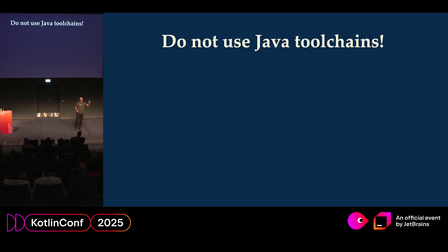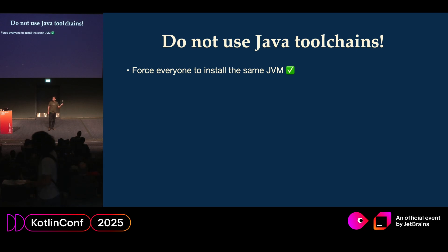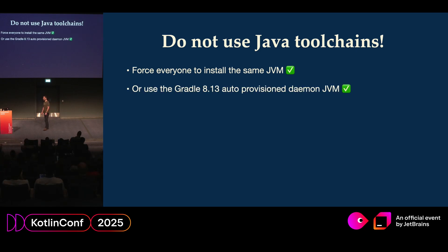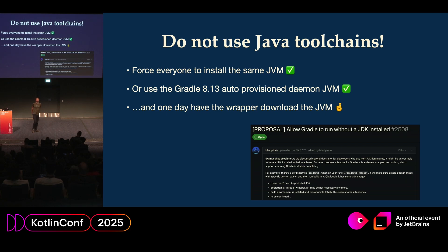You might say, of course, but I need to share the same Java version with all my CI and developers. You can do that by being very adamant about it — putting some checks in your build files. Since Gradle 8.13, you also have the opportunity to use auto-provisioned daemon toolchains, where Gradle will download automatically the specified JVM for you. And hopefully in the not too far future, we will be able to run Gradle without a JVM, and the JVM will be a dependency like the others.